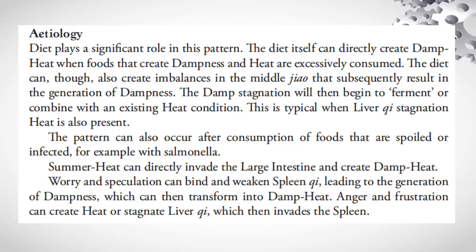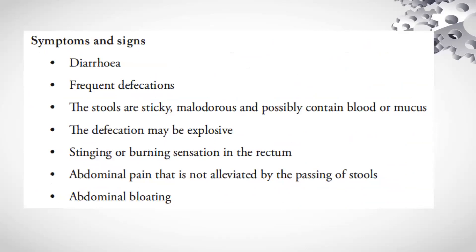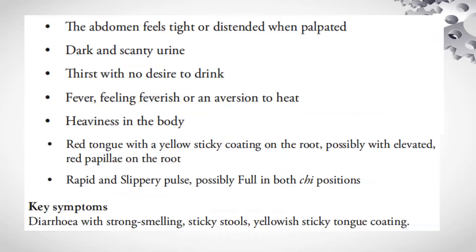Summer heat can directly invade the large intestine and create damp heat. Worry and speculation can bind and weaken spleen qi, leading to dampness which can then transform into damp heat. Anger and frustration can create heat or stagnate liver qi, which then invades the spleen. Symptoms and signs: there will be diarrhea, frequent defecations. Stools are sticky, malodorous, and possibly contain blood or mucus. Defecation may be explosive. Stinging or burning sensation in the rectum. Abdominal pain that is not alleviated by the passing of stools. There will be abdominal bloating, the abdomen feels tight or distended when palpated, dark and scanty urine, thirst with no desire to drink, fever or feeling feverish or aversion to heat, heaviness in the body. Tongue is red with a yellow sticky coating on the root, possibly with elevated red papillae. Rapid and slippery pulse, possibly full in both chi positions.